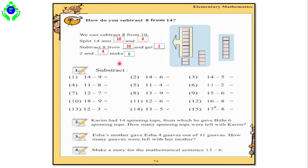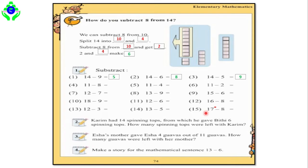I hope you were all able to understand how we find the solution. Now let's jump to question number 1, titled Subtraction. The first question is 14 minus 9 equals 5. Question number 2: 14 minus 6 equals 8. Question number 3: 14 minus 5 equals 9. To get these answers easily, you should use your fingers and count with a basic and clear concept.